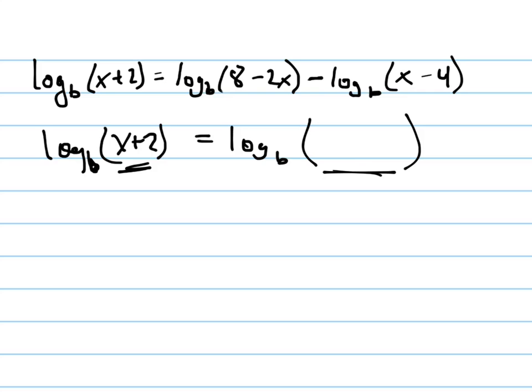So that's already good. This is a subtraction problem, and how can I combine or condense this? It's 8 minus 2x all over x minus 4. That's how I condense it.